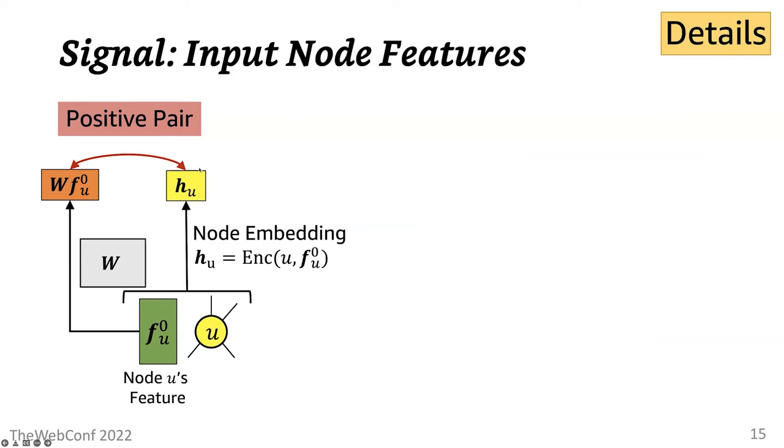This yellow rectangle denotes the embedding of the anchor node, which is obtained by applying a graph neural net encoder, which I will describe later. For the anchor node, its input node feature is taken to be its positive sample. And more specifically, this anchor node's embedding is compared with the linearly transformed input node features, here shown as this orange box.